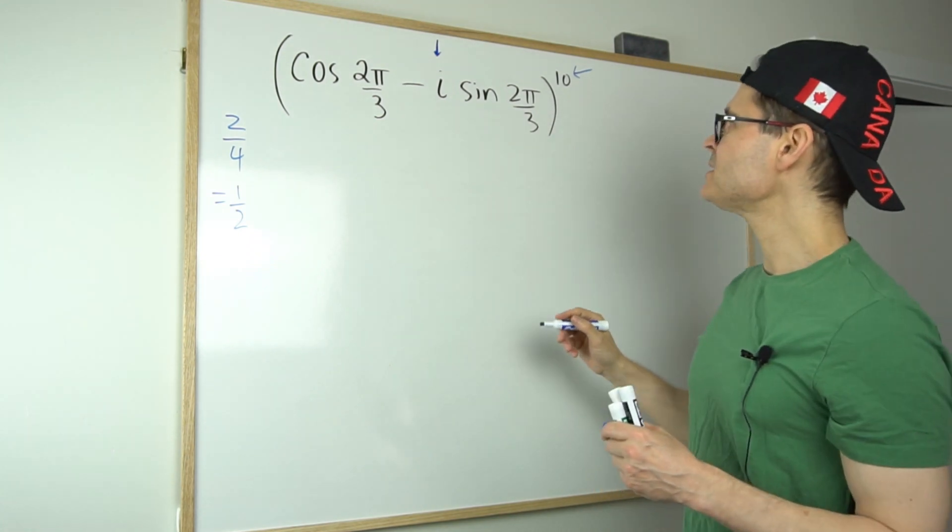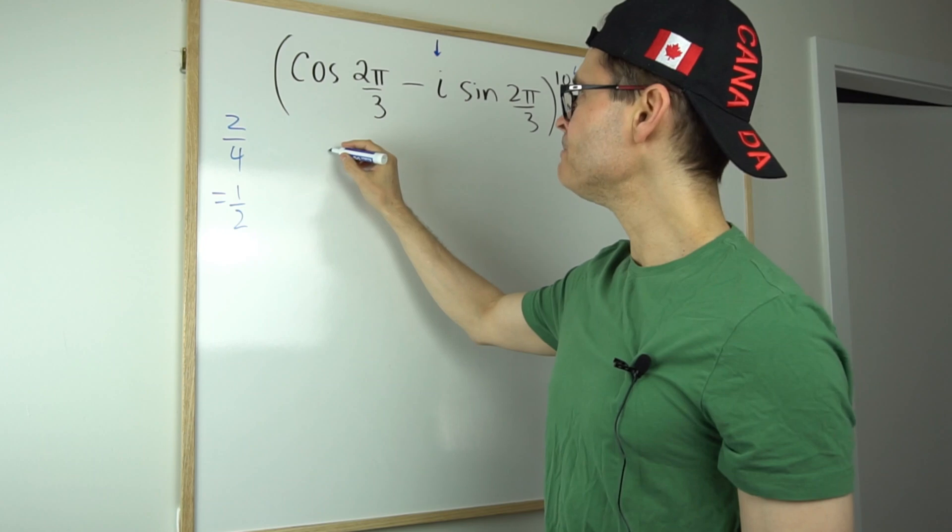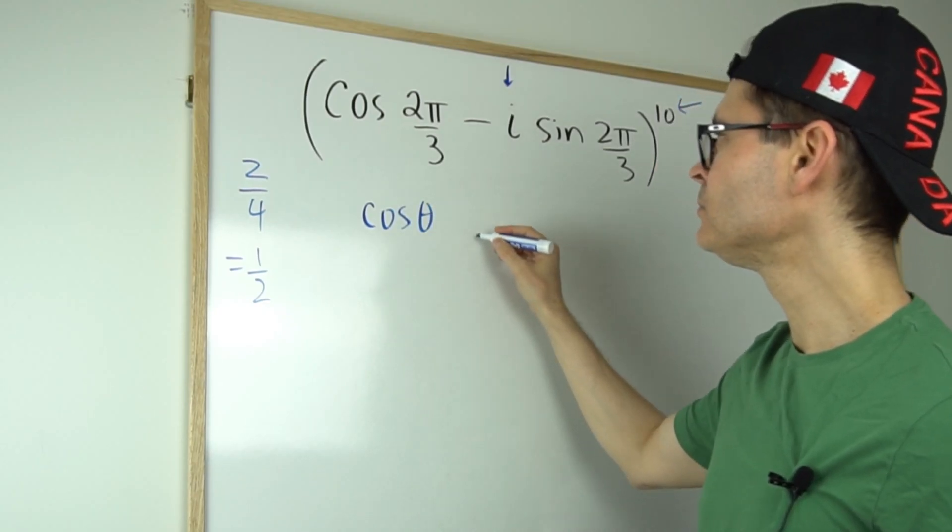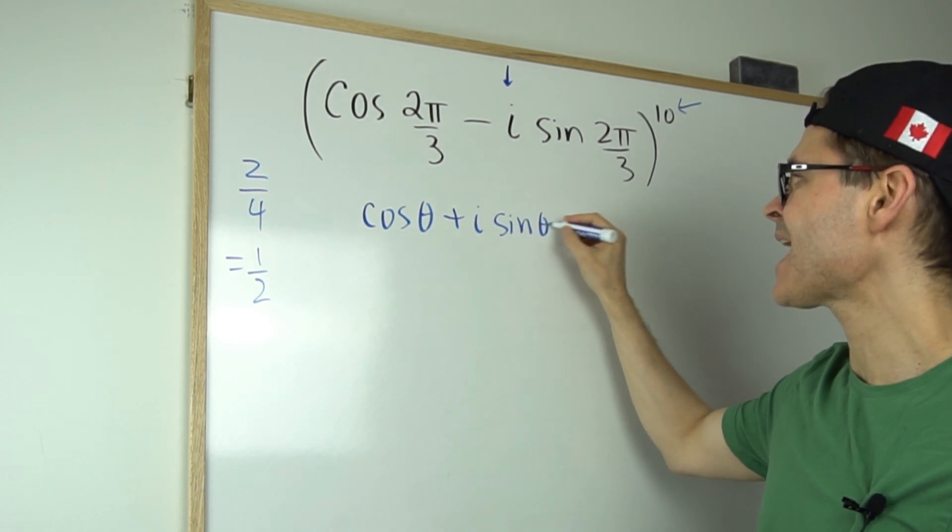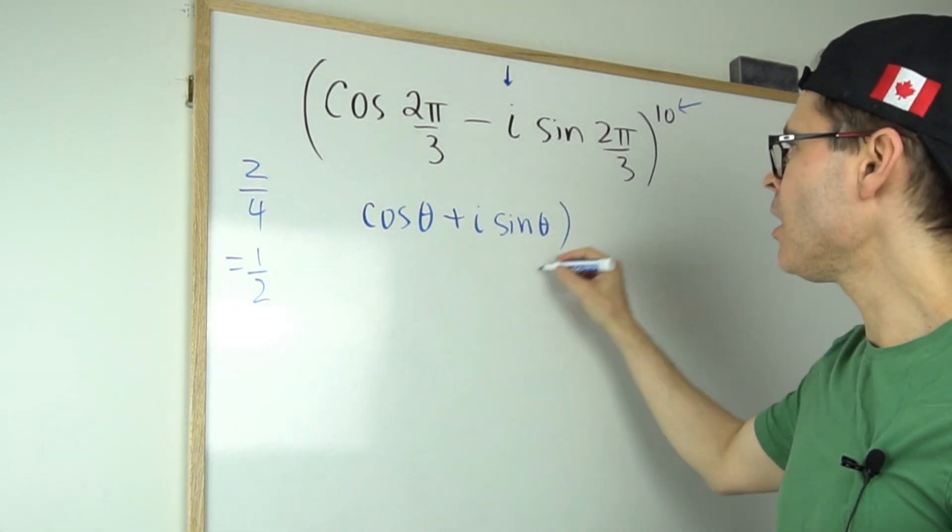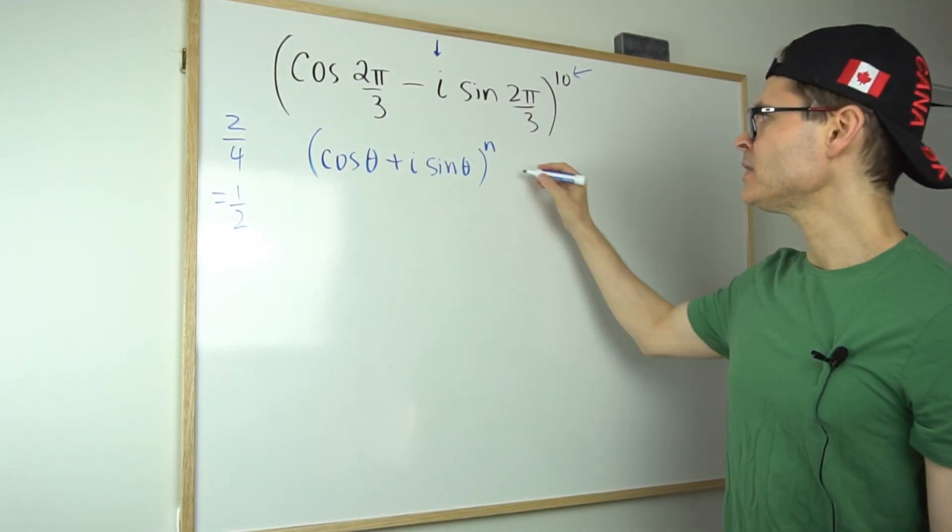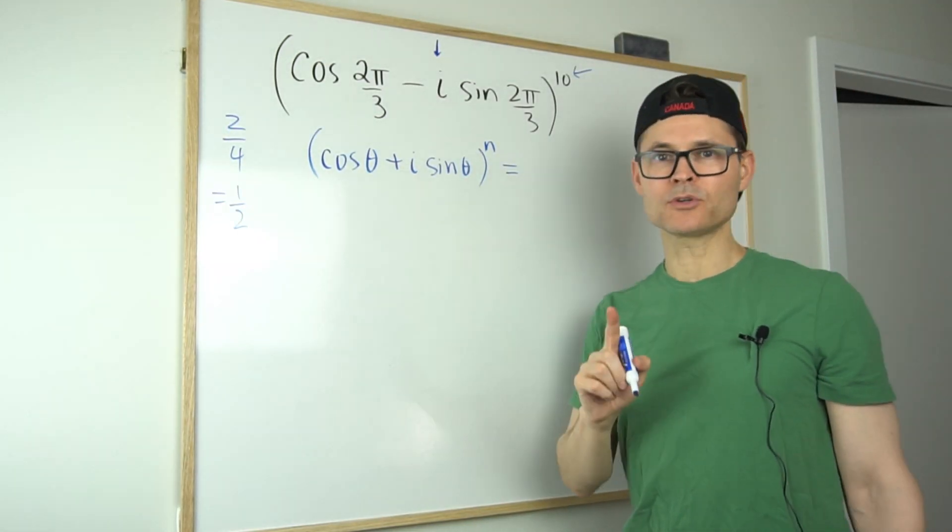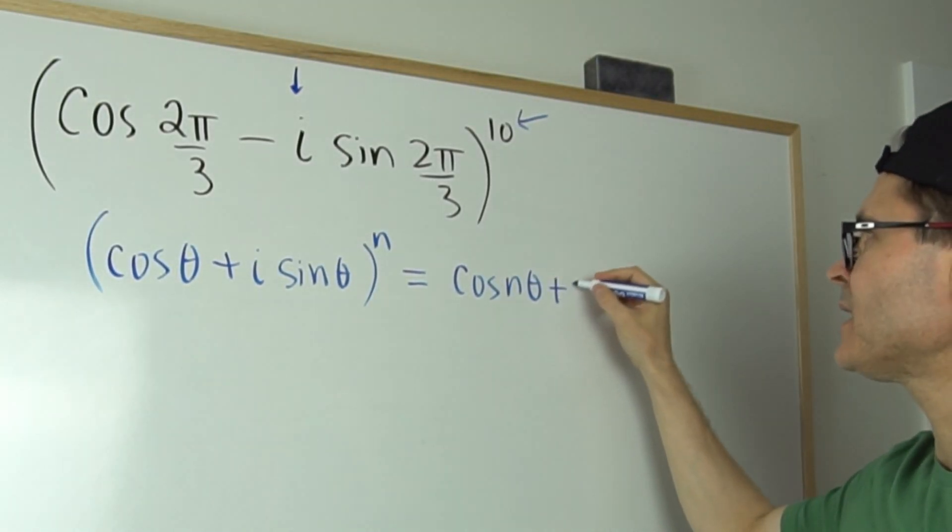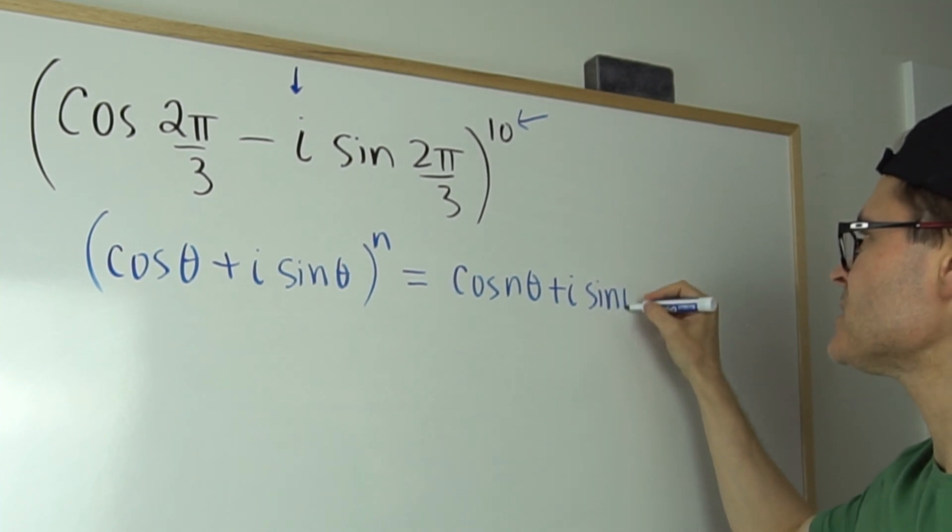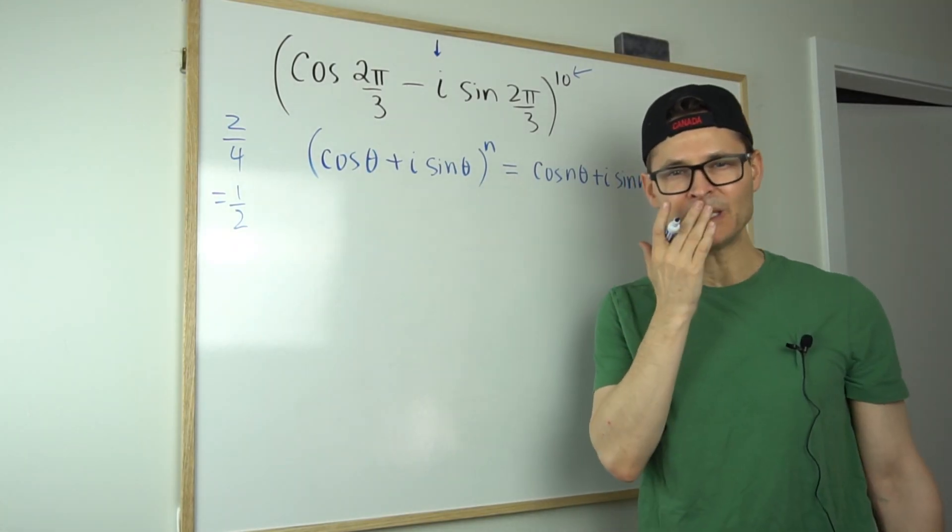And what De Moivre tells us is that if we have the cosine of an angle plus i times the sine of that exact same angle, all to the power of n, then that can be written equivalently. This is a theorem, so it's been proven as the cosine of n theta plus i times the sine of n theta. Okay, so that's just fact. We can use that theorem.